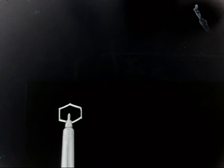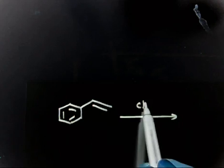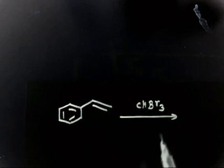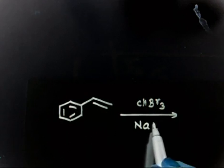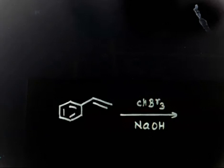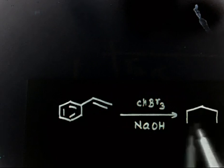You have to give the mechanism for this reaction. The reactant is a benzene containing a double bond. If this is reacted with CHBr3, that is bromoform, which we have discussed in class — if bromoform is treated in basic medium, this gives the final product.